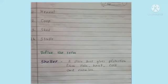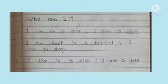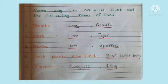First you have to write new words, then define the terms, fill in the blanks with the words given below, who am I, and name any two animals that eat the following kinds of food.